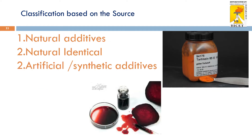Classification based on source: natural additives, natural identical additives, and artificial or synthetic additives — these are the three classifications based on the source of food additives. For example, tartrazine yellow is a colorant added as an additive in food; it is synthetically manufactured and hence comes under the category of artificial or synthetic additives. Beta-carotene is an example of a natural food additive because it is derived from a natural plant source such as beetroot.